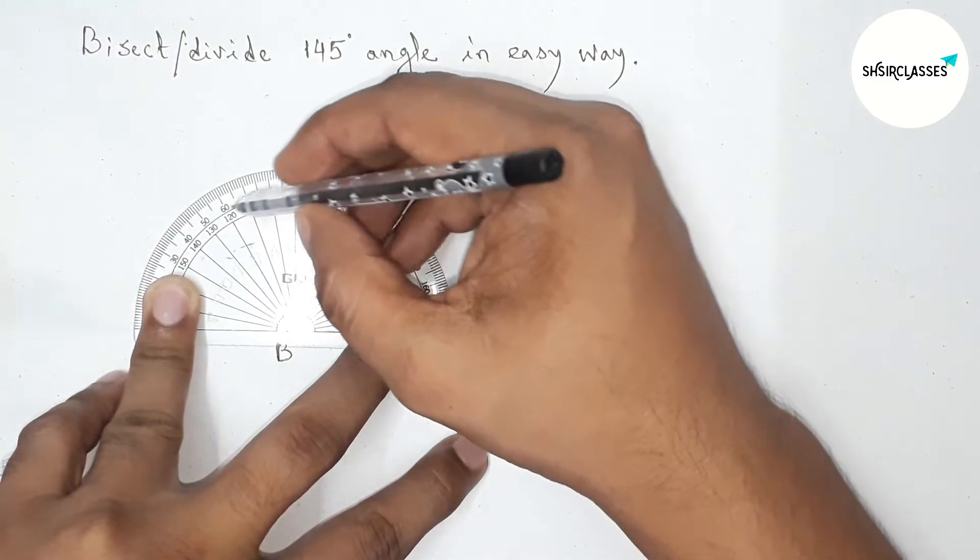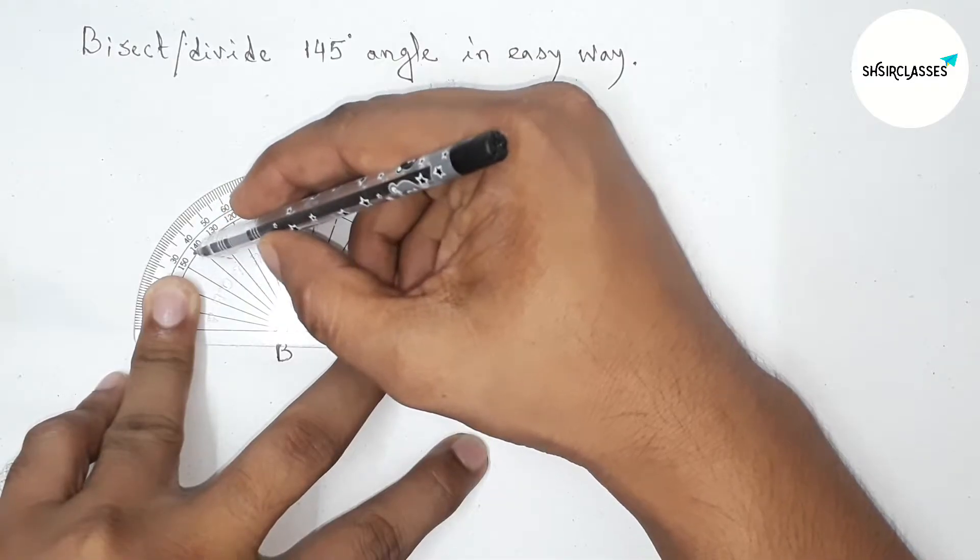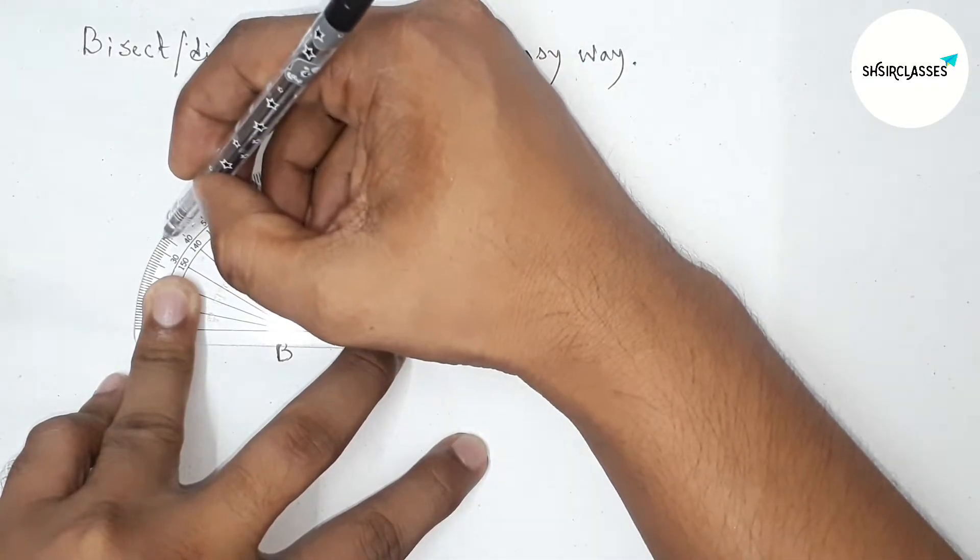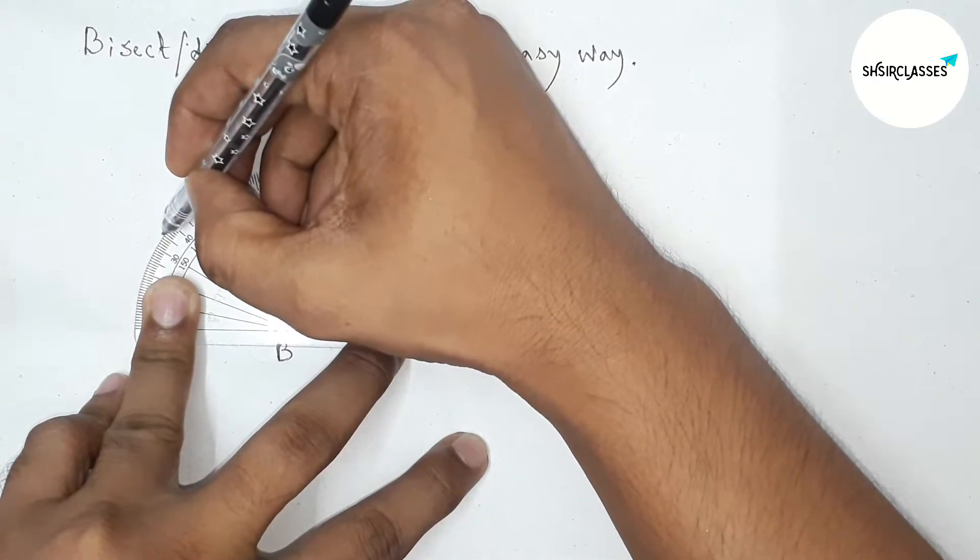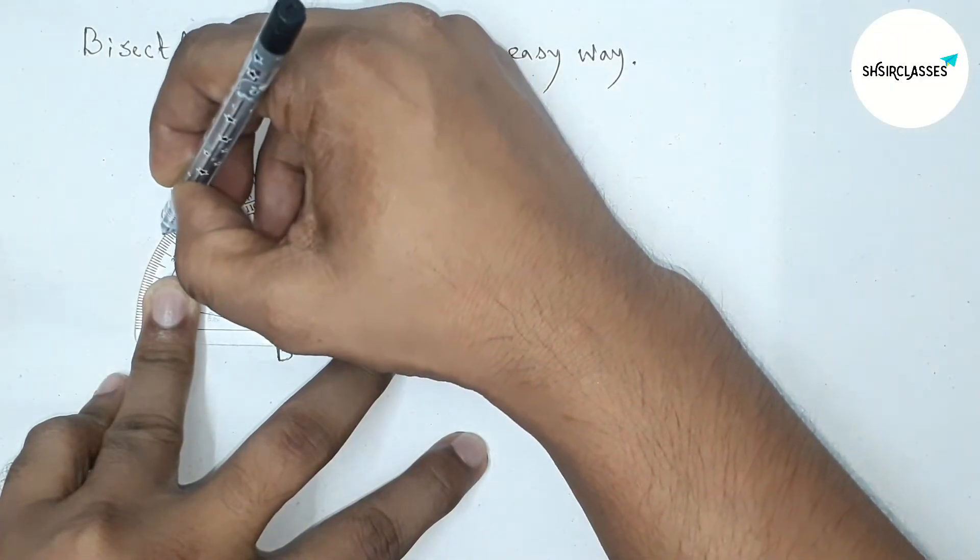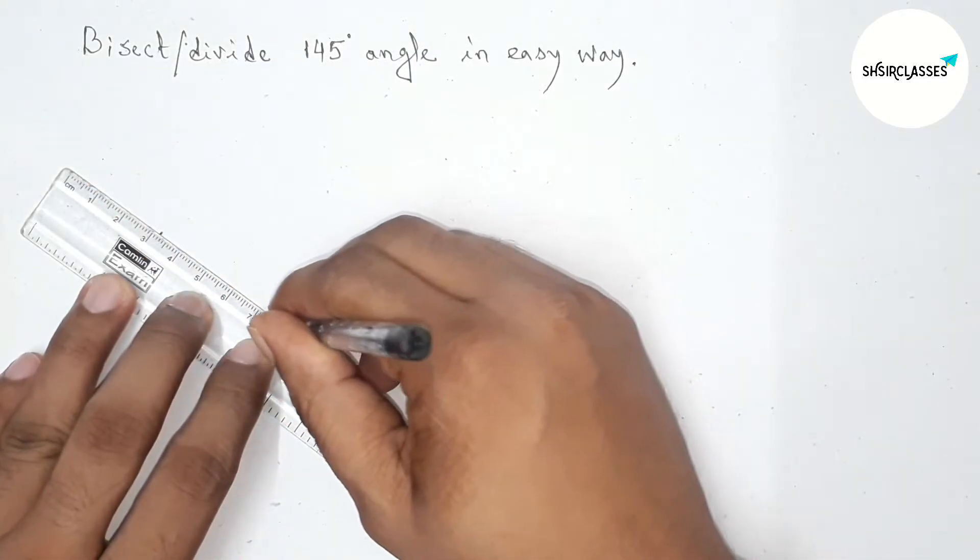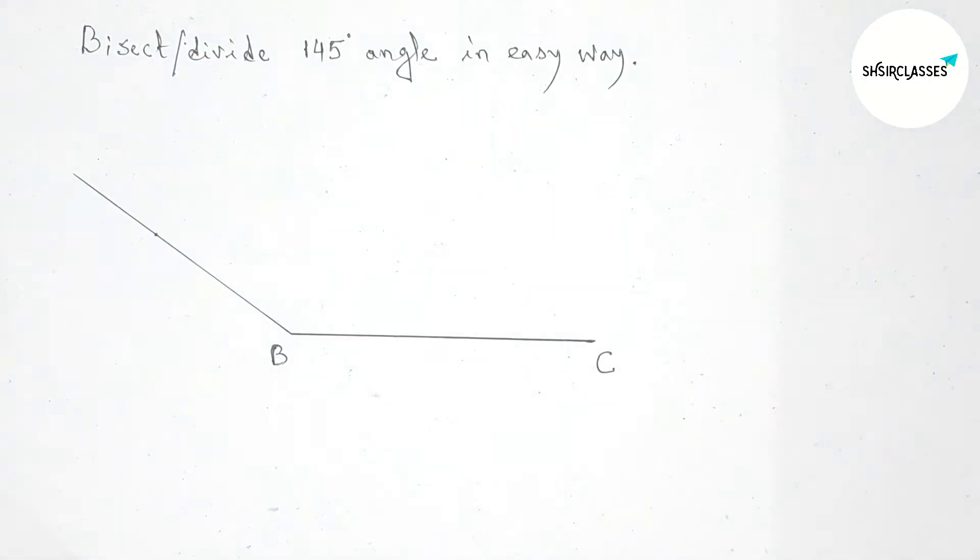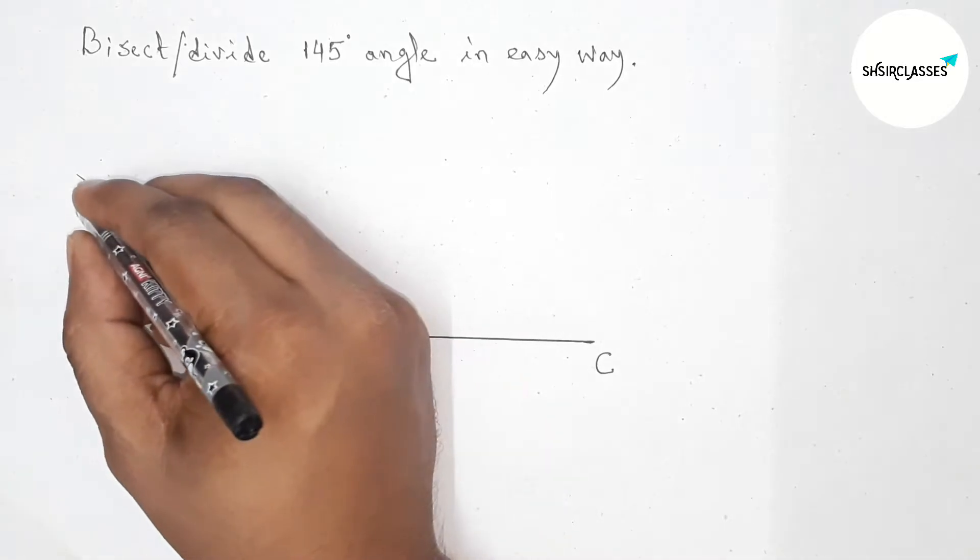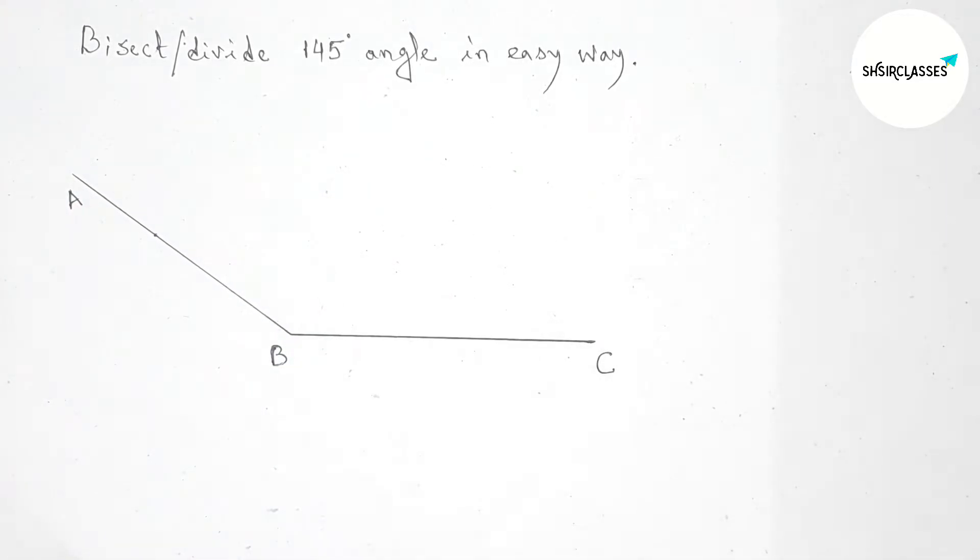Putting the protractor on point B perfectly. Now here between 140 and 150 this is 145, so first marking 145 here, then joining this line to get here 145 degree angle and here taking point A. So angle ABC is 145 degrees.